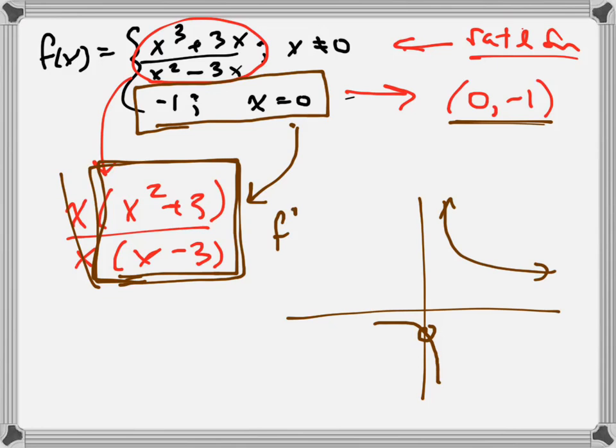Let's call it f prime. F prime of 0. Now when I plug that in, I get negative 1. Well, would you look at that? That's exactly what they're filling in right there. So what do they just do to this graph?